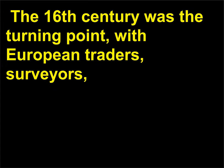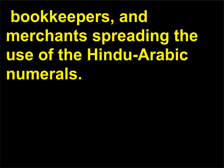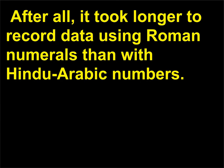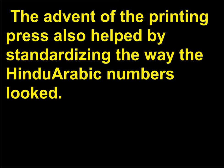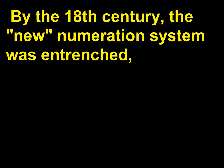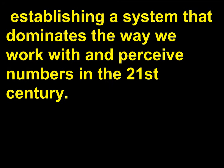The 16th century was the turning point, with European traders, surveyors, bookkeepers, and merchants spreading the use of the Hindu-Arabic numerals. After all, it took longer to record data using Roman numerals than with Hindu-Arabic numbers. The advent of the printing press also helped by standardizing the way the Hindu-Arabic numbers looked. By the 18th century, the new numeration system was entrenched, establishing a system that dominates the way we work with and perceive numbers in the 21st century.